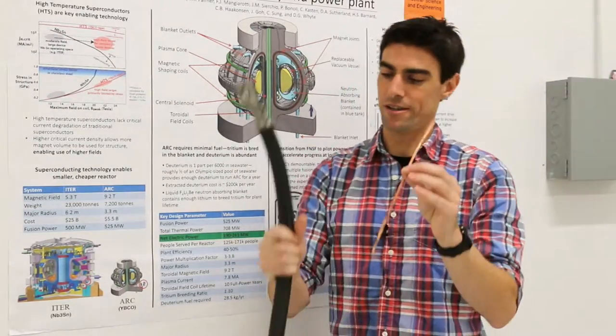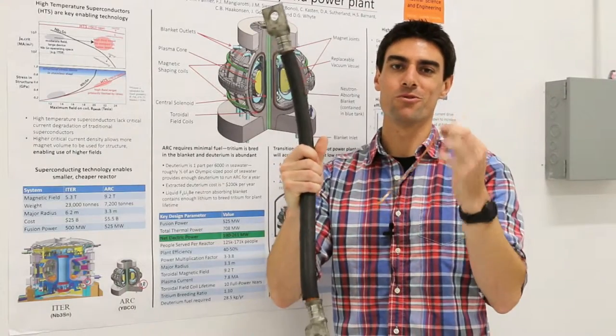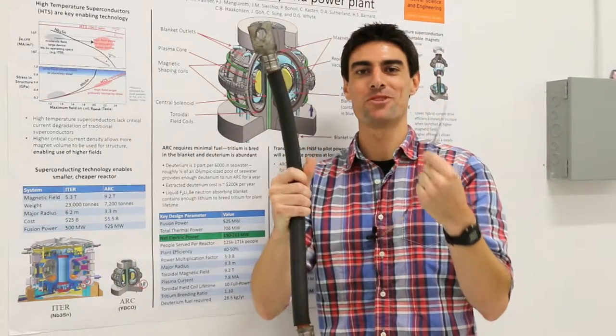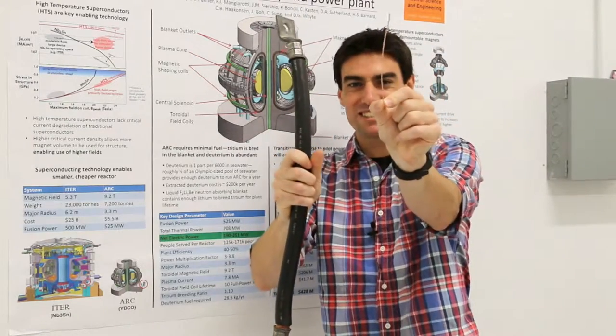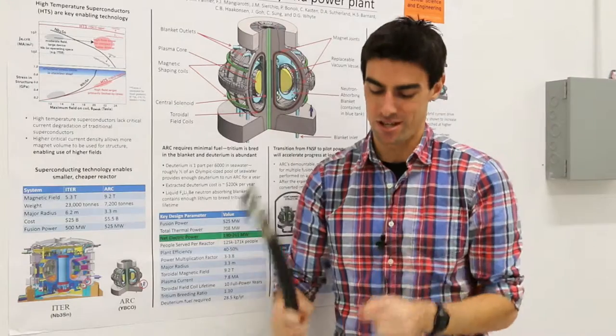I should also mention that if you were to cool both of these down to liquid nitrogen temperatures, you could put the same amount of current through each of these. So there's this big copper conductor and here's this tiny, tiny little piece of superconductor.